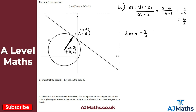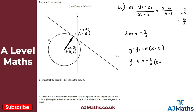Now that we know the perpendicular gradient and the point B, we use the equation of a straight line: y minus y1 equals m times x minus x1. So y minus six equals minus three over four times x minus minus one, which is the same as x plus one.